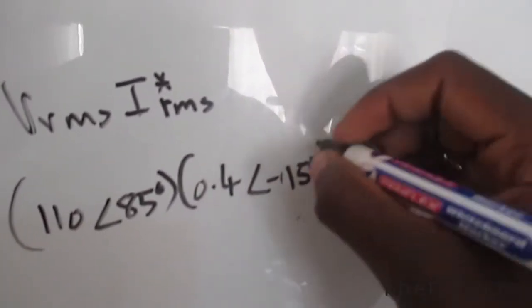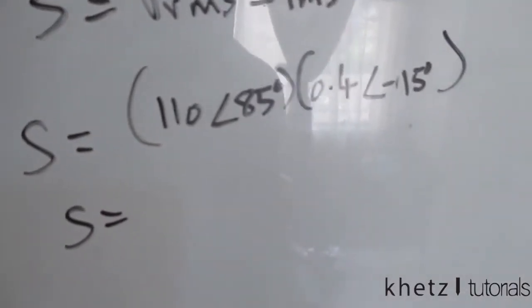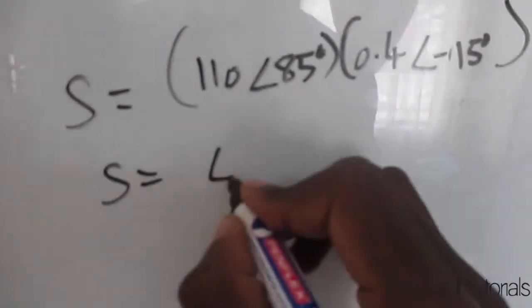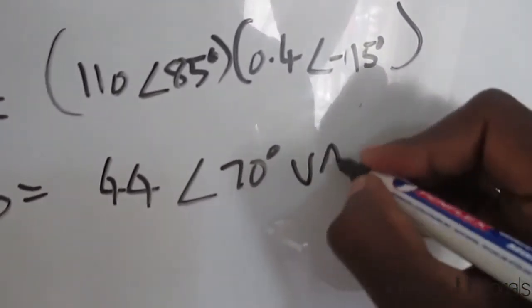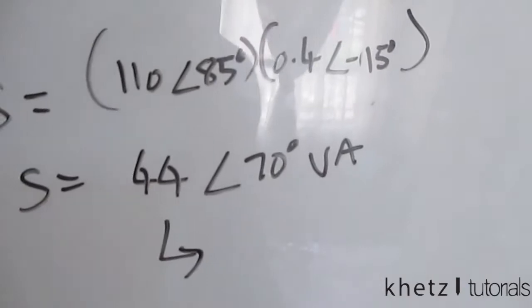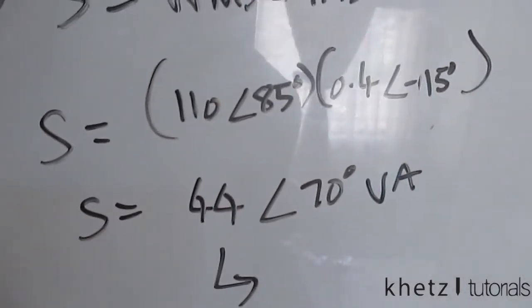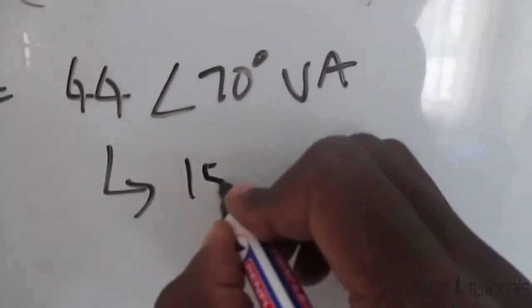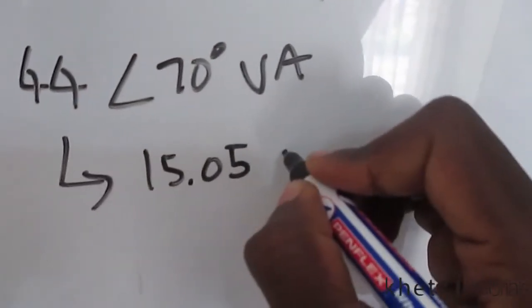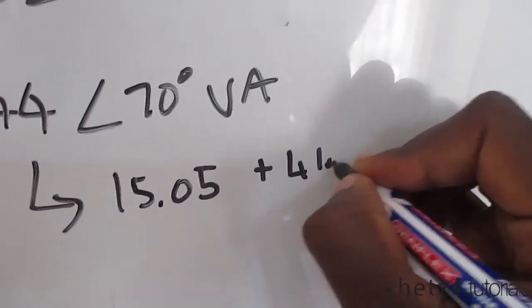Just put a negative sign at the angle and put this into your calculator. And this should give you a value of 44 with an angle of 70 degrees in volt amperes. Now changing this into rectangular form should give you a value of 15.05 plus j41.35.